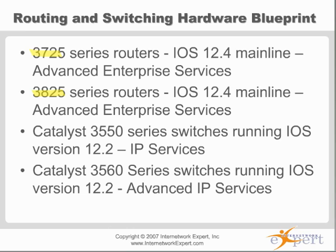One thing to be careful of is falling into a comfort zone where R1 and R2 are always connected by a certain interface. You don't want to always do rack one in your home lab — we number our rack rentals one through 25 for the R&S racks. If they were all numbered rack one, people would do 10 or 20 labs with rack one ingrained in their head. Then they go into the CCIE lab on rack two, three, or four and put the wrong number in — and two hours into the lab they can't get their peering session up with the backbone.